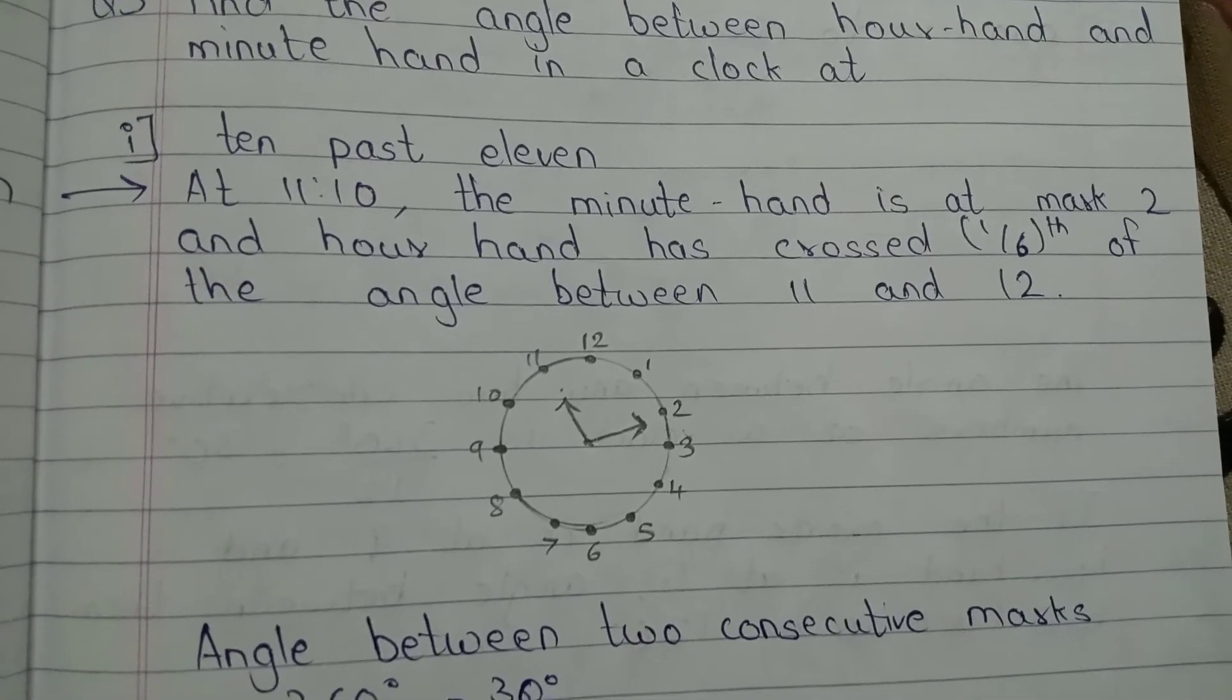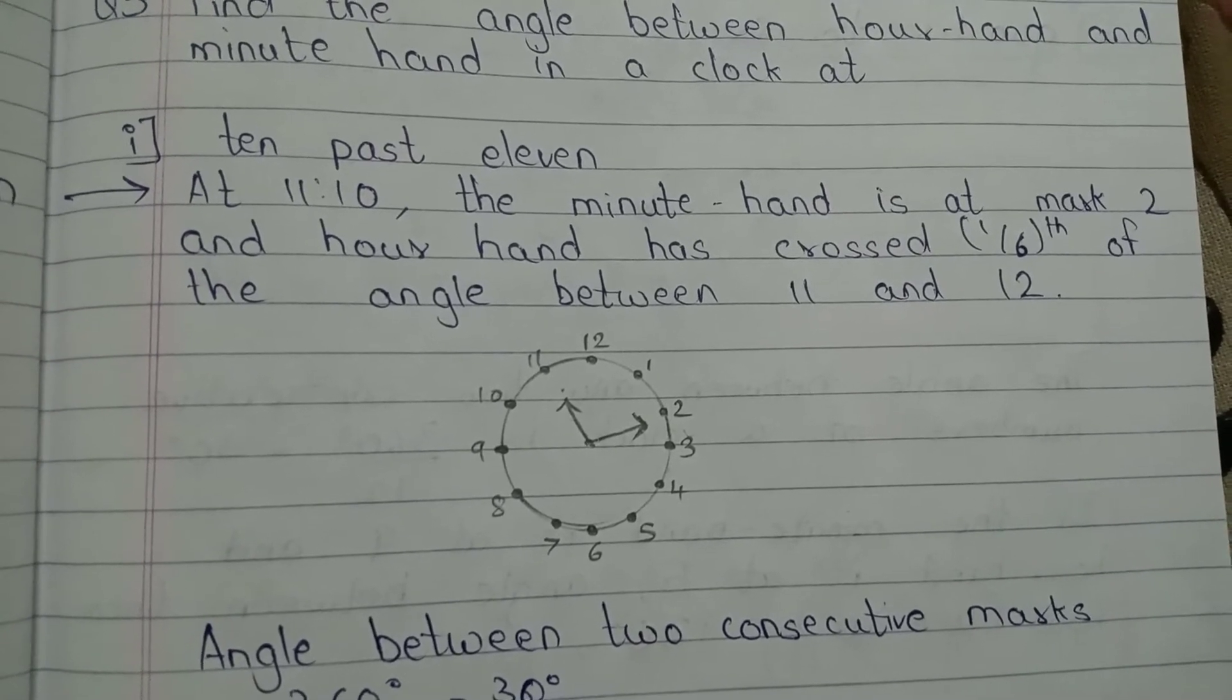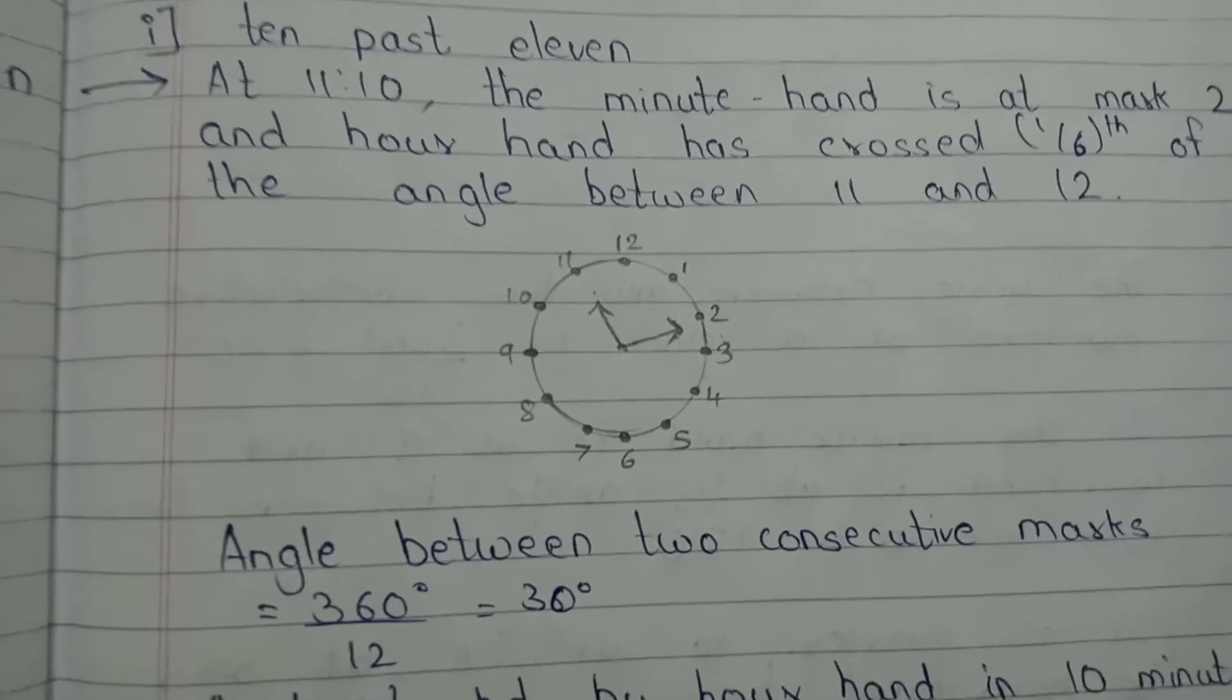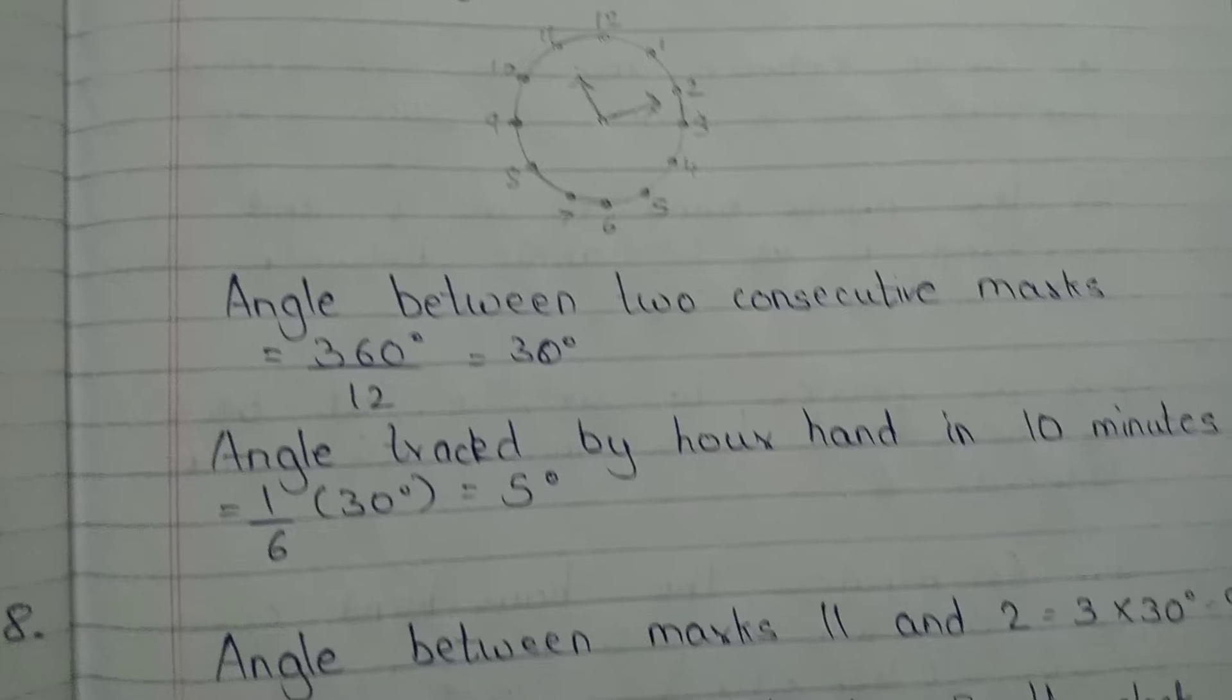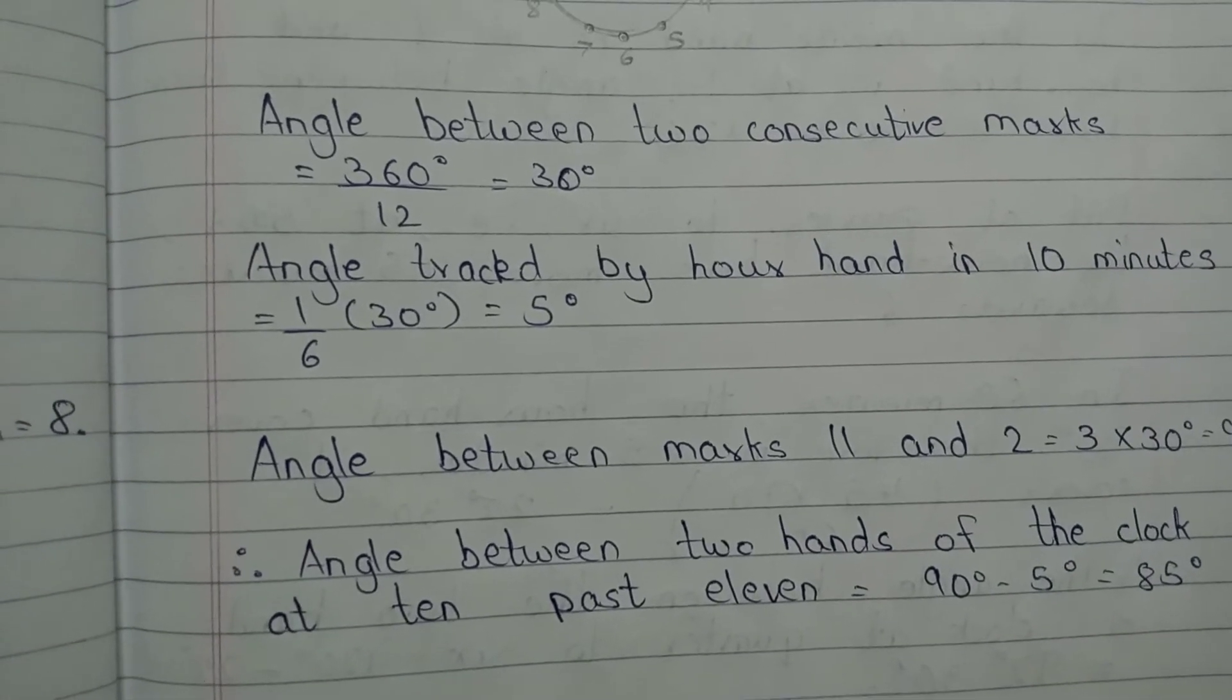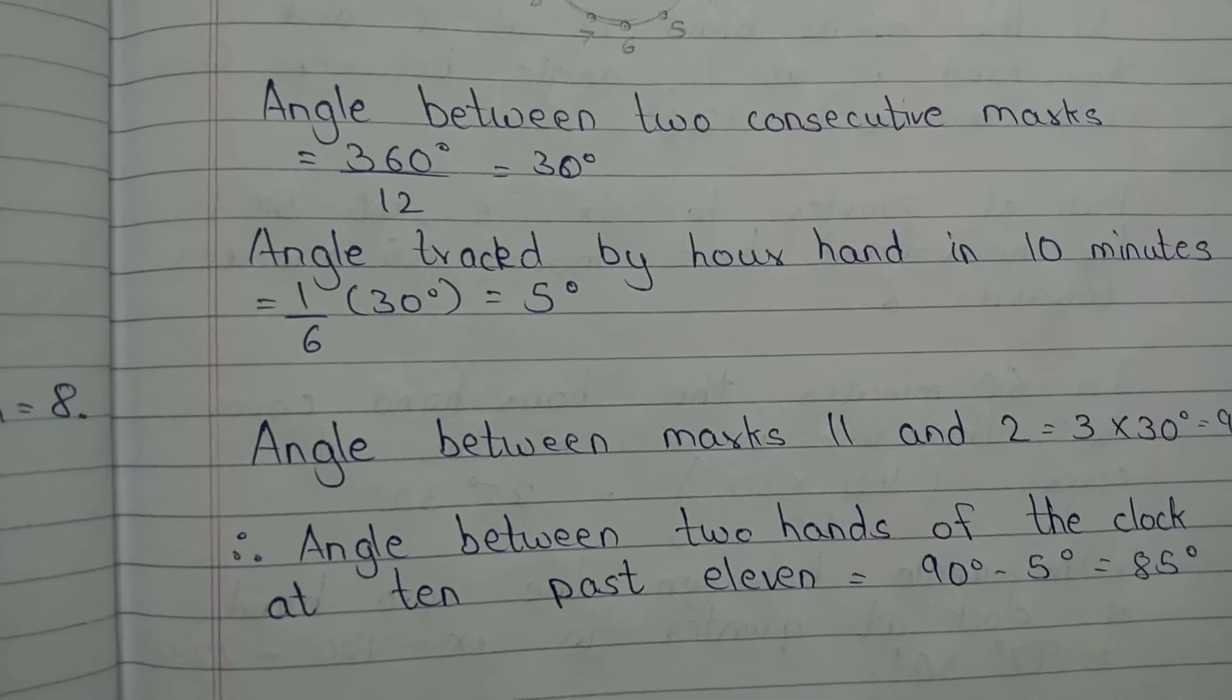And the hour hand has crossed one-sixth part of the angle between 11 and 12. So you can see here the clock. The angle between two consecutive marks is 360 degrees divided by 12, which is 30 degrees.